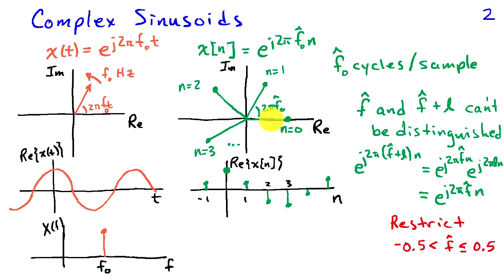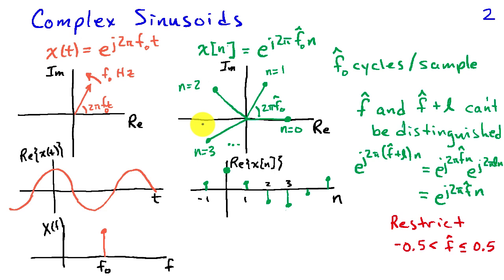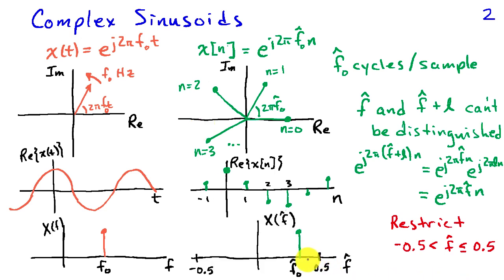Because of this ambiguity associated with adding or subtracting extra complete rotations, we're going to restrict f-hat to be in the interval minus 0.5 to plus 0.5. That means we consider f-hat to be cycles up to the negative real axis in the positive or negative direction. Consequently, my spectrum is going to show up at frequency f-hat between minus 0.5 and 0.5.